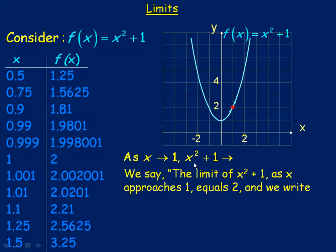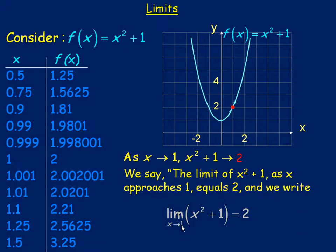So we say as x approaches 1, the value of x squared plus 1 approaches a value of 2. The limit of x squared plus 1 as x approaches the value of 1 equals 2. We write that mathematically as: the limit as x approaches 1 of x squared plus 1 equals 2. Notice in this case the left-hand limit and right-hand limit are both 2, and that's why the limit actually exists and is 2.